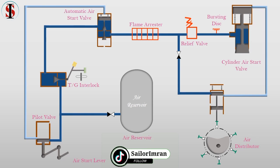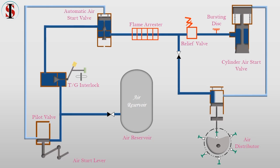The air passing through the interlock pushes the spring and opens the valve. Air is now available in the cylinder head starting air valve manifold and the distributor. The distributor consists of a negative-type cam for positive overlap. When unit number 4 comes into the cam profile, the air compresses the spring and the valve opens to operate the unit number 4 cylinder head starting air valve.